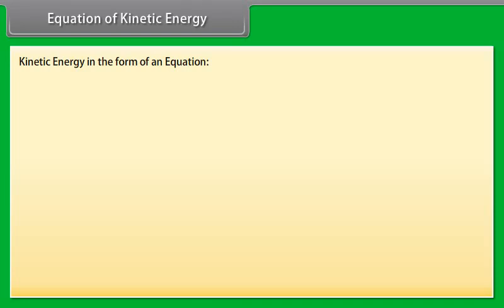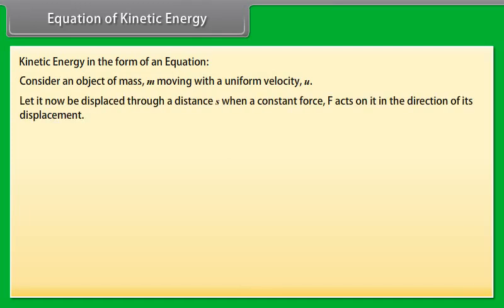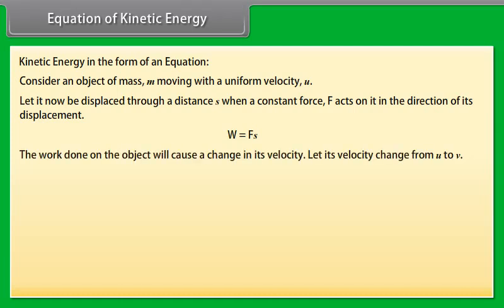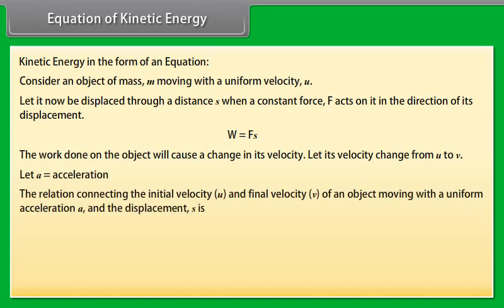Let us express the kinetic energy of an object in the form of an equation. Consider an object of mass m moving with a uniform velocity u. Let it be displaced through a distance s when a constant force f acts on it in the direction of its displacement. We know that the work done W = fs. The work done on the object will cause a change in its velocity. Let its velocity change from u to v, and let a be the acceleration produced. Using v² - u² = 2as, this gives s = (v² - u²) / 2a.